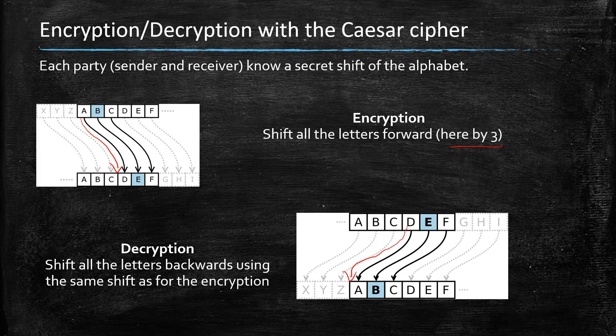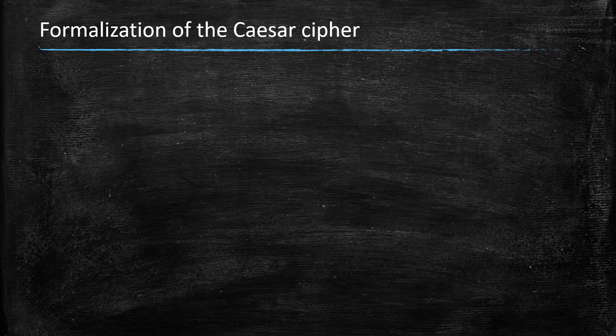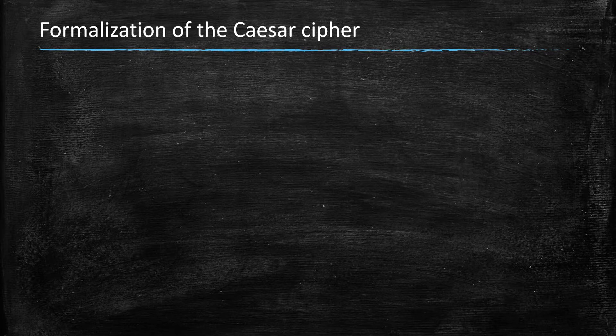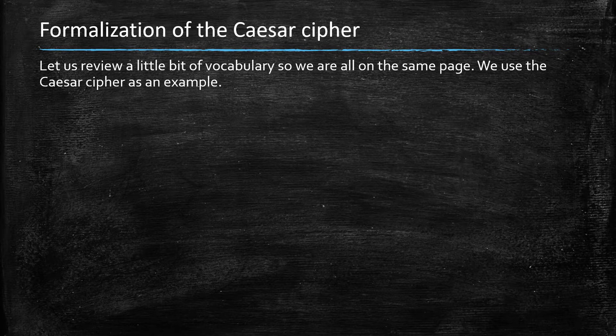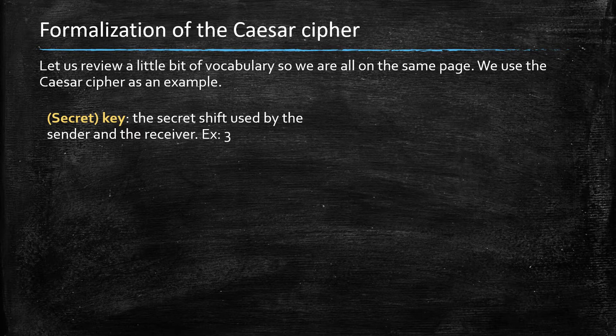Before we go any further, the Caesar cipher is a good opportunity to give some formal definitions that we're going to be using throughout the course. So the secret key, or the key when there's just one, is the secret piece of information that allows you to decrypt and encrypt.